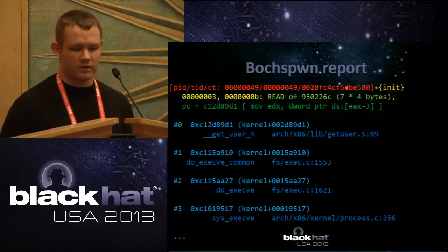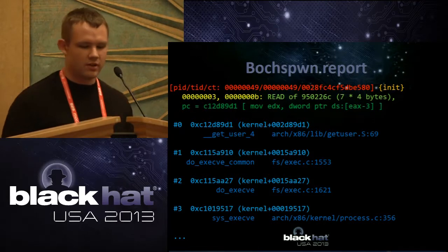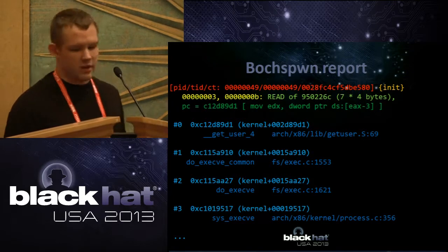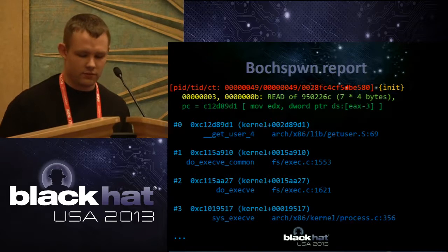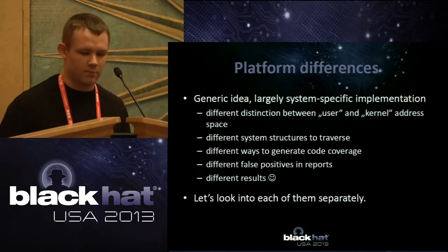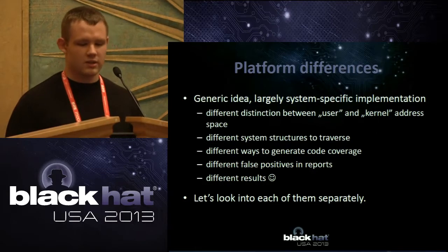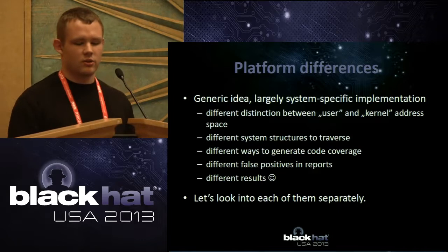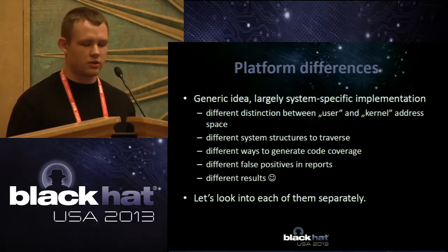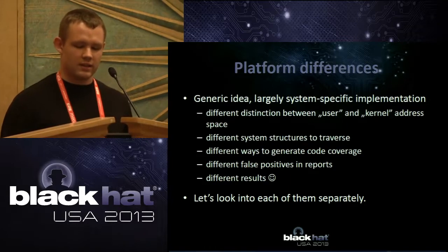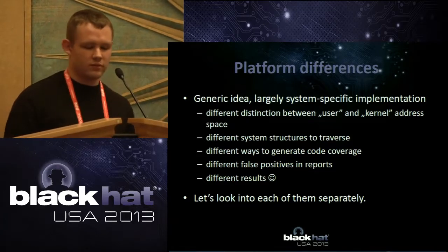The exemplary reports that BoxPwn generates are nicely formatted. You have the thread ID in the form of process ID, thread ID, and creation time; the process name; the type of memory access and its length; the instruction disassembly; and the full call stack. This format is basically the same for Linux, Windows, and all other platforms. The idea for detecting double fetches is generic and applies to all operating systems, but there are many system-specific things we need to address — different user/kernel memory distinctions, different structures to traverse, different false positives, and different results.